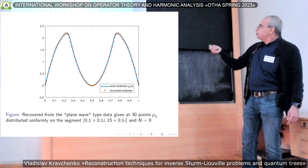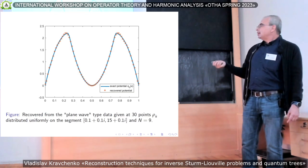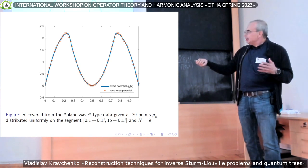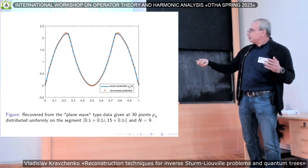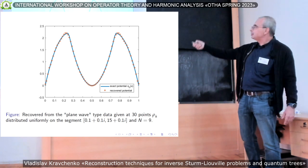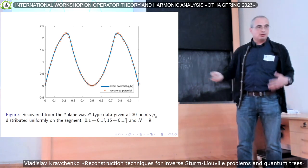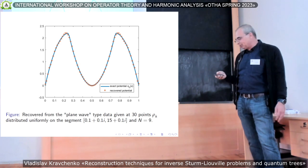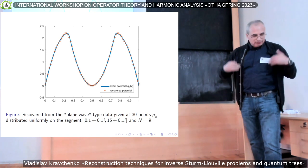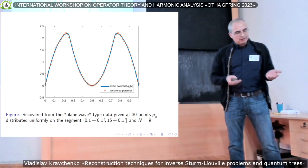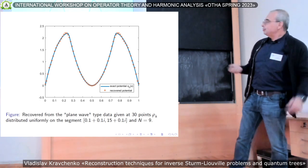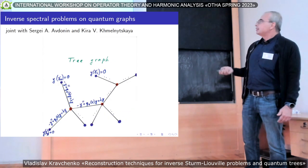This is just an example of a recovered potential from plane-wave data. The data were given at just 30 values of ρ_k, and this is how this not very smooth potential was recovered by this method: first we find the coefficients at the endpoint, then use them to find the two spectra, and solve the inverse two-spectra problem to obtain the result.